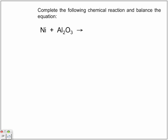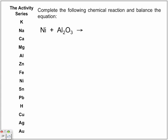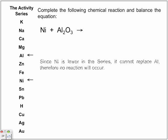Next example: complete and balance — nickel and aluminum oxide. We look at nickel and the non-metal aluminum. Aluminum is higher in the activity series and is more reactive. Nickel is lower in the series, so it cannot replace aluminum — therefore no reaction. When writing your equation, you can write 'NR' or 'no reaction' in the products.